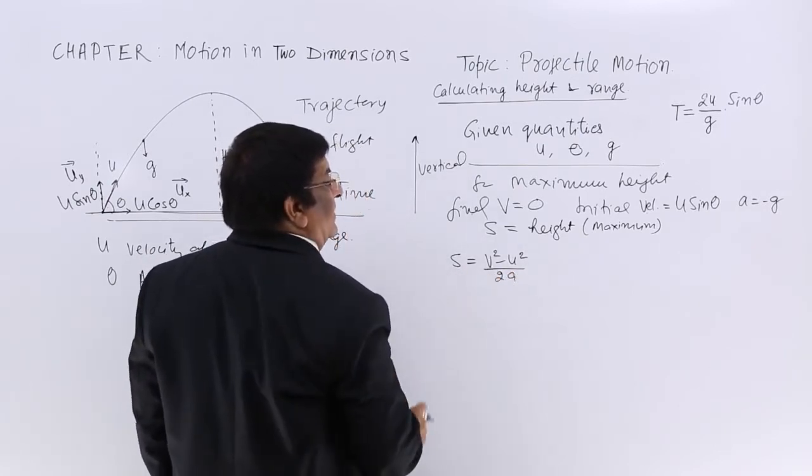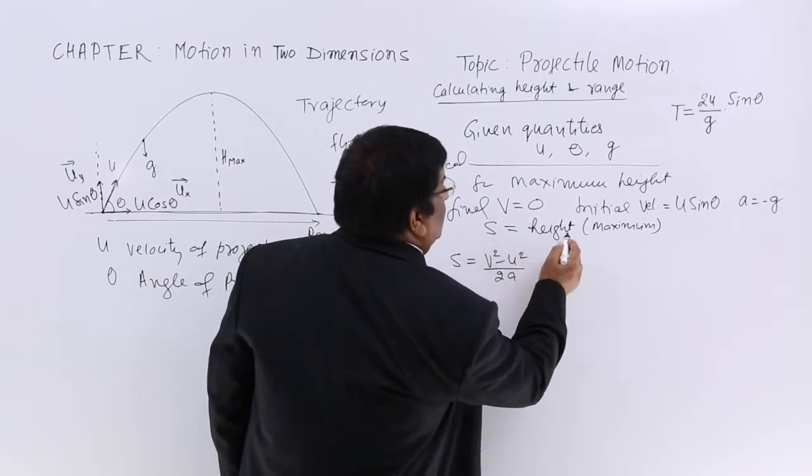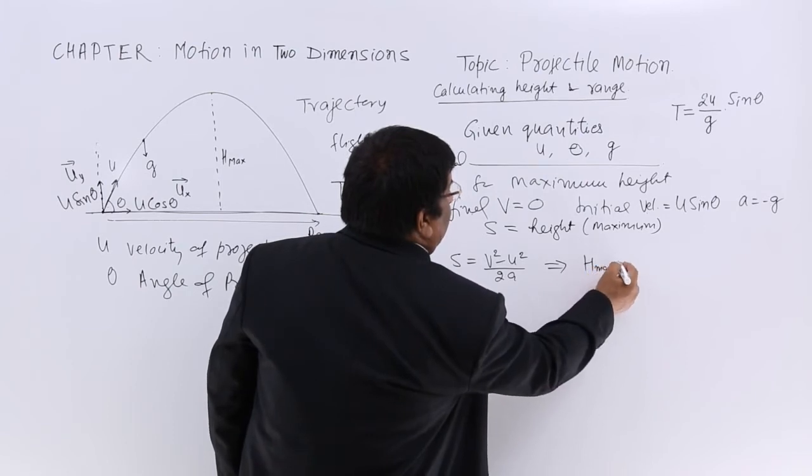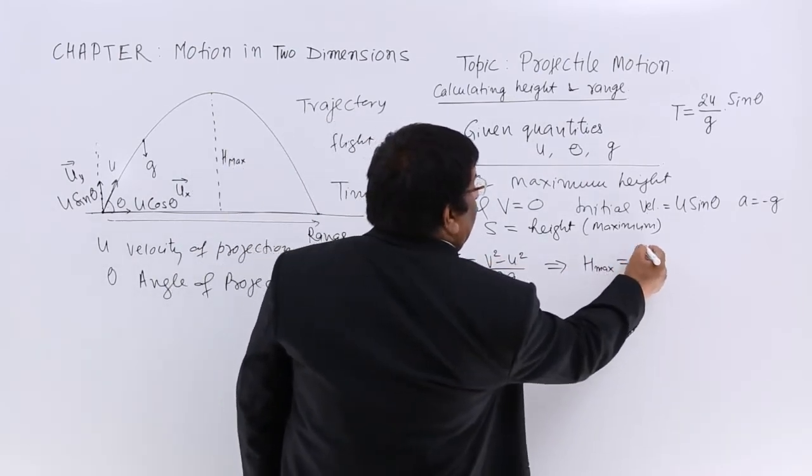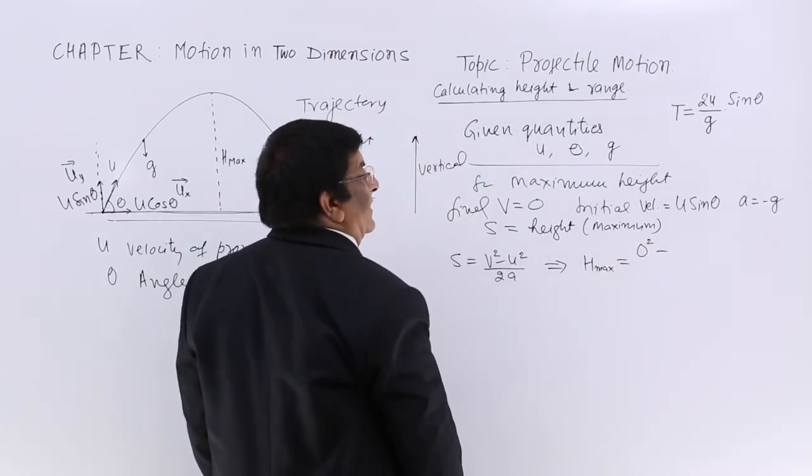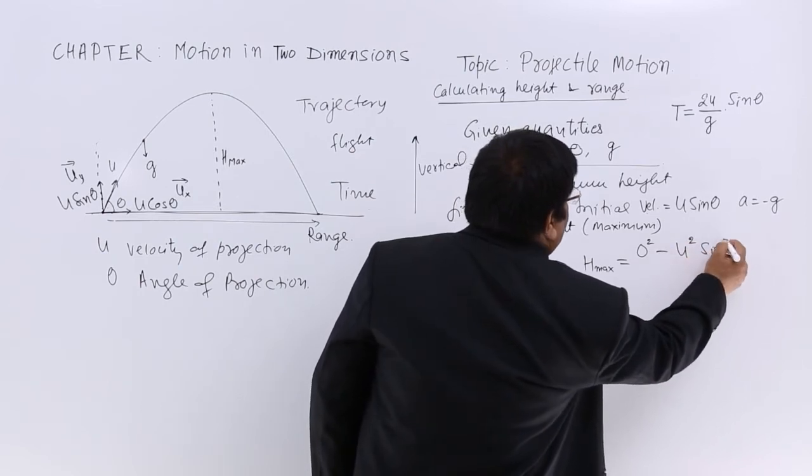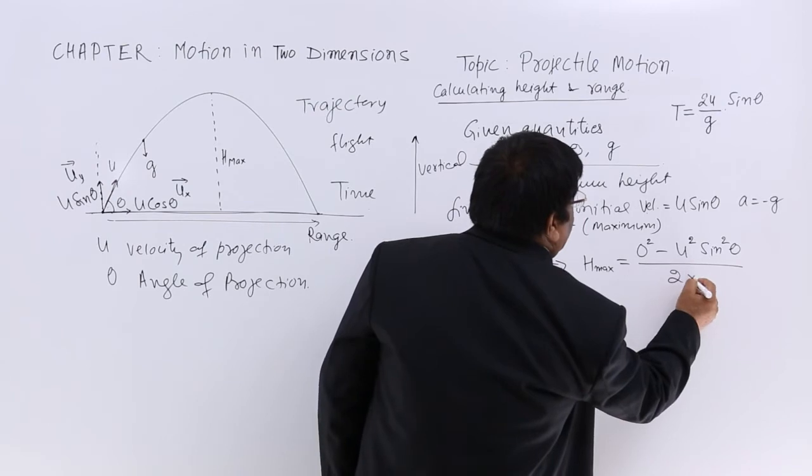This is the third equation. Putting in the values, S equals maximum height which we're finding. This equals V² which is 0, minus u² sin² θ, upon 2 into A.